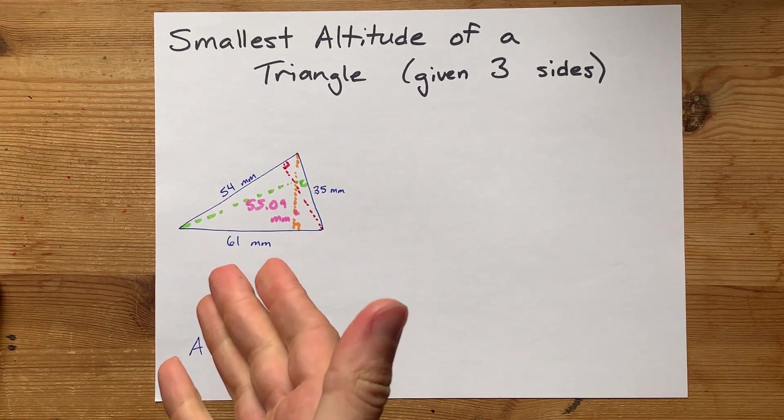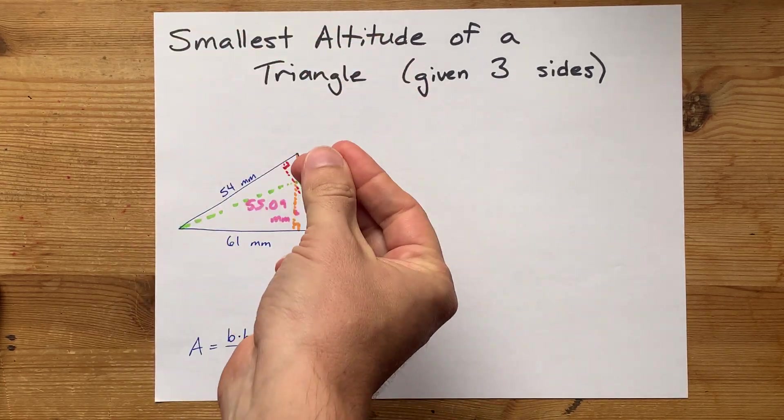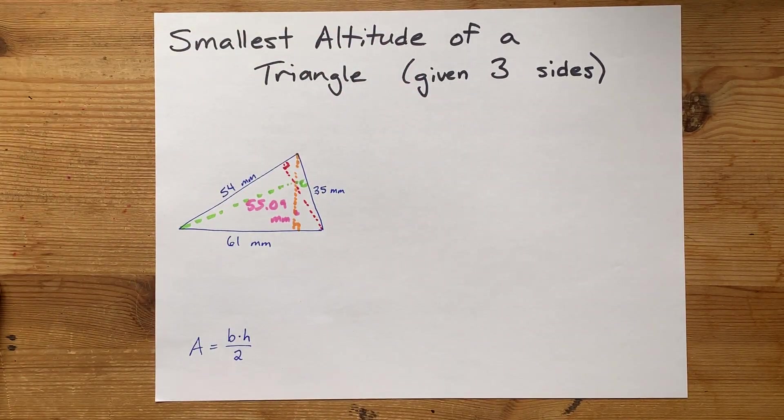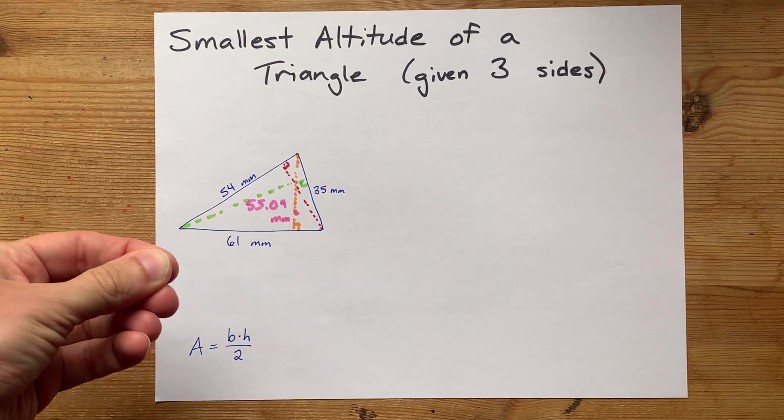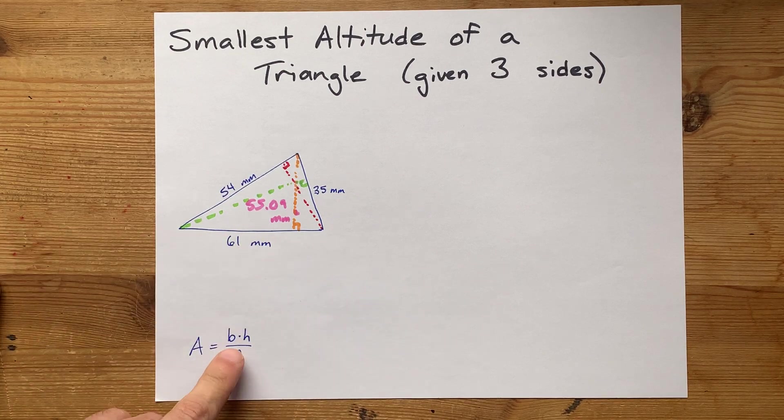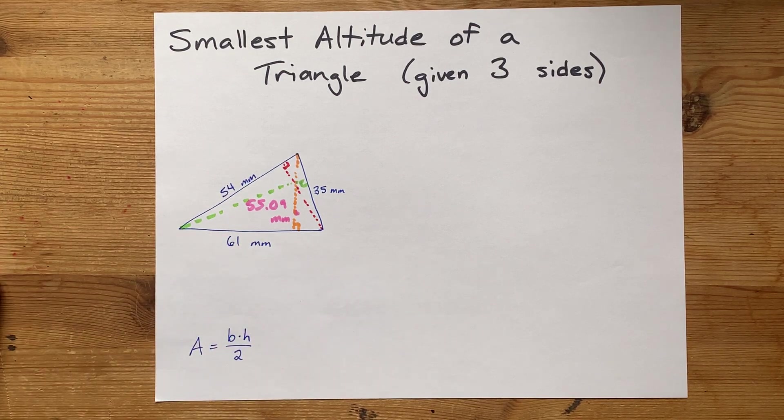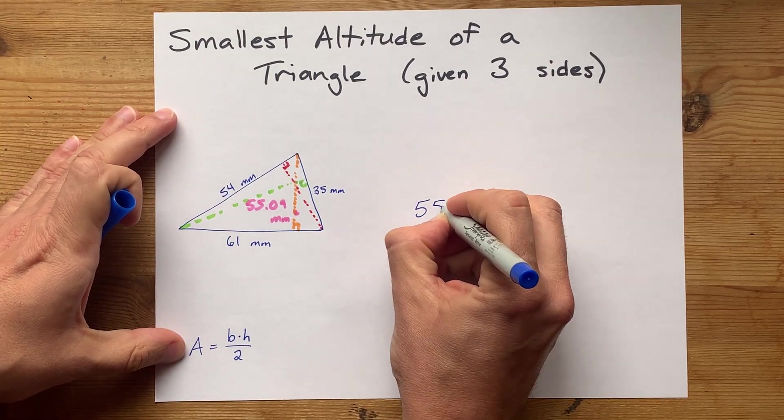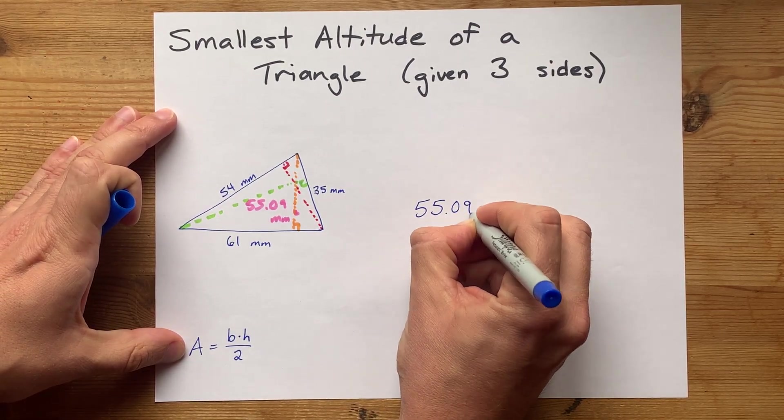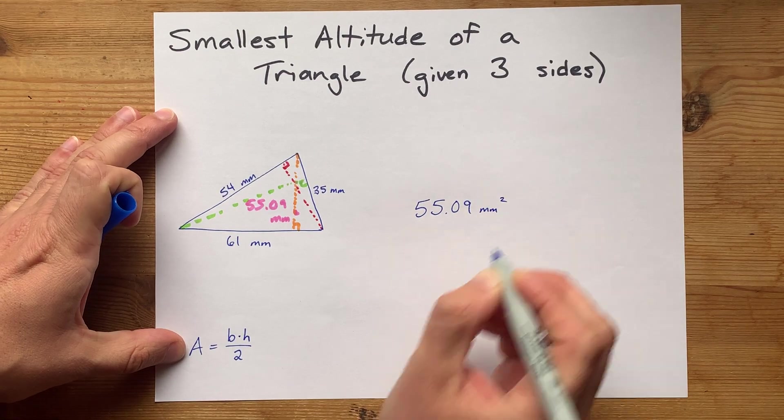So which of those three lines is the shortest or smallest? Well, let me point out that the area of a triangle is base times height divided by 2, where the height is the altitude that meets the base at 90 degrees. Now, the area we've already calculated to be 55.09 millimeters squared in this case.